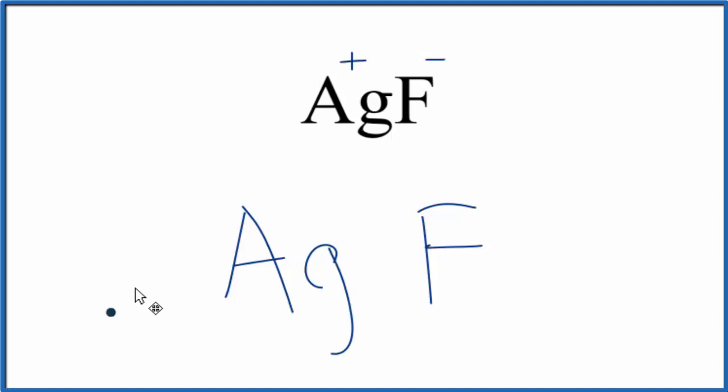So we can think of silver as having this one valence electron. And then fluorine, that's in group 17, sometimes called 7a. It has seven valence electrons. So we'll put seven around it.